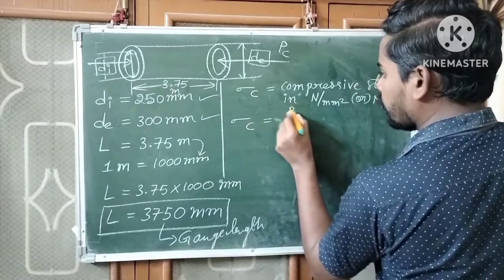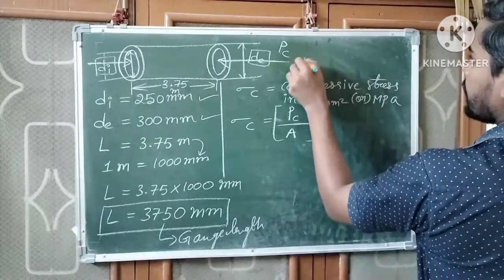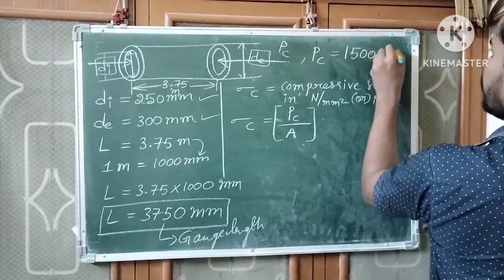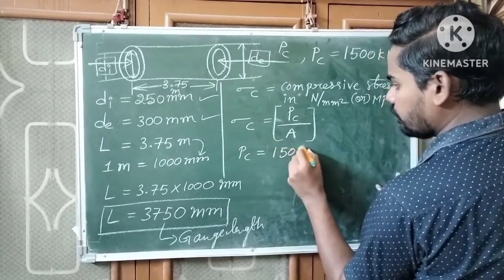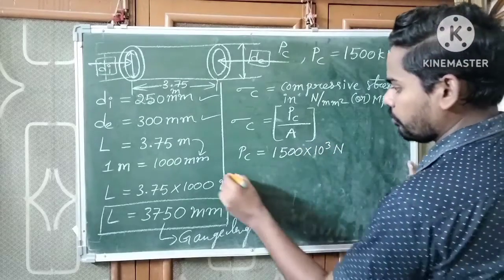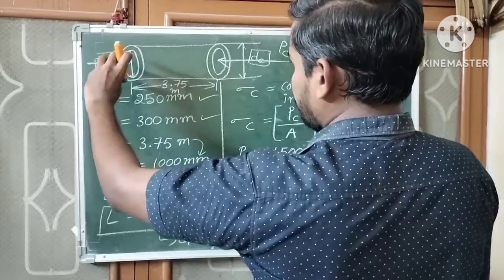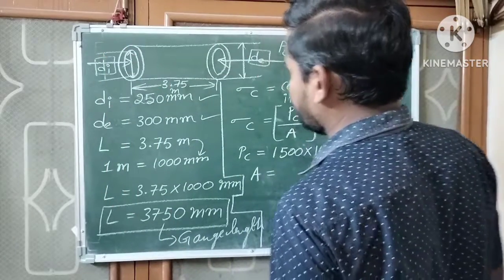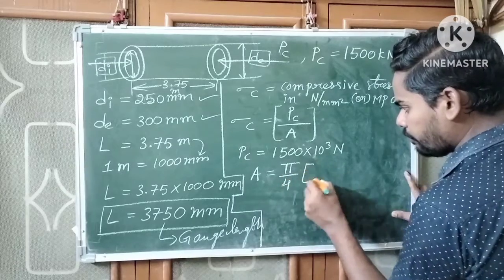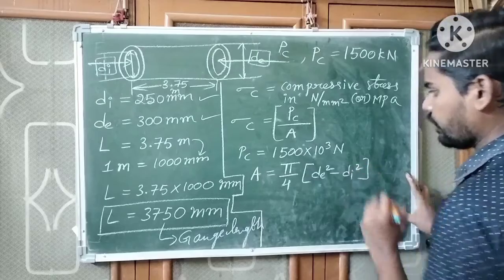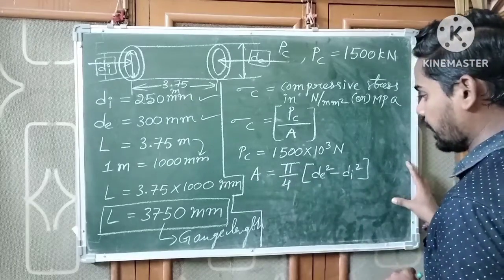Compressive stress σ_C = P_C / A. The compressive load P_C is 1500 kilonewton = 1500 × 10³ newton. For the area: this column has a circular hollow cross-section. In case of a hollow column, area A = (π/4) × (D_E² − D_I²), whereas for a solid column it would be (π/4) × D_E².